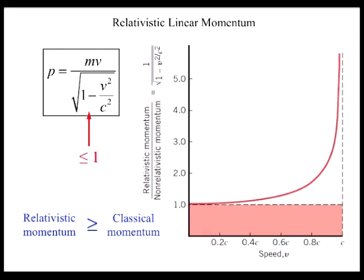On the other hand, when the speed of the object becomes comparable to the speed of light, the relativistic momentum becomes significantly greater than the non-relativistic momentum and the relativistic linear momentum equation must be used.